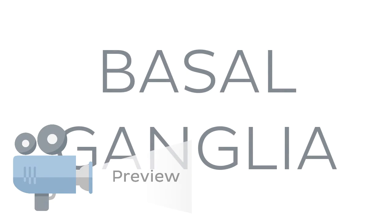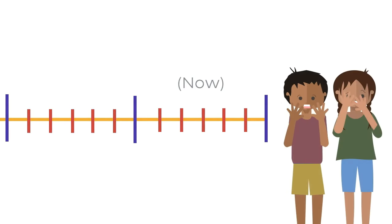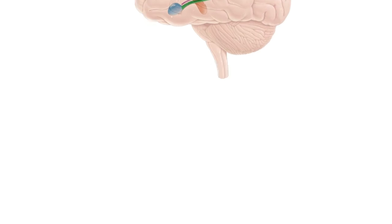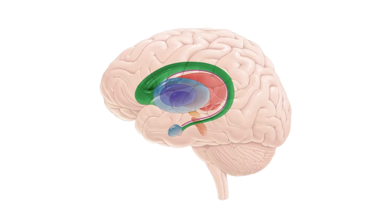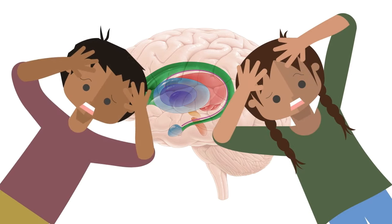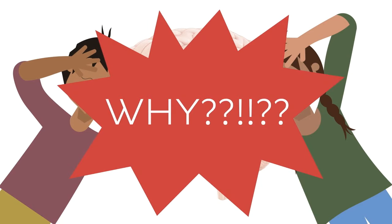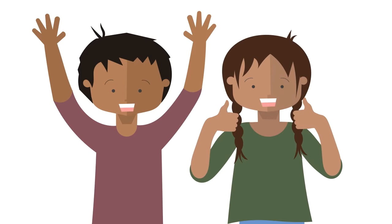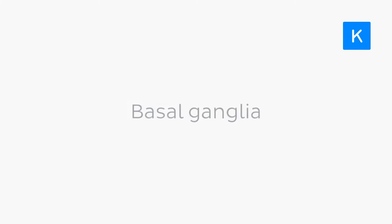Basal ganglia — two words that have been filling anatomy students with dread since the beginning of time. This group of grey matter structures that control so many of our conscious actions also seem to have an unreasonable influence on our stress levels. But fear not, we're going to overcome this basal ganglia angst, and by the end of this video, you'll be a BG expert. Buckle up, it's time to tackle the basal ganglia.